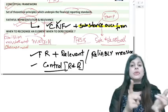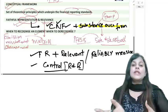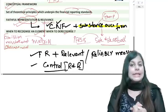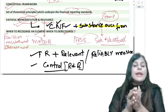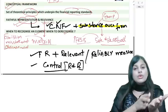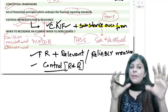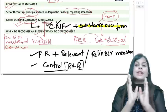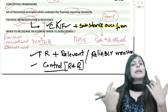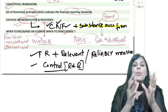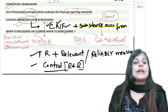Financial statements should also have secondary qualitative characteristics: they should be comparable, neutral, timely, understandable, and verifiable. Primary qualities are faithful representation and relevance. Secondary qualities are comparability, timeliness, understandability, and verifiability. Our objective is to make financial statements meeting these qualities, and accordingly our accounting standards are framed.